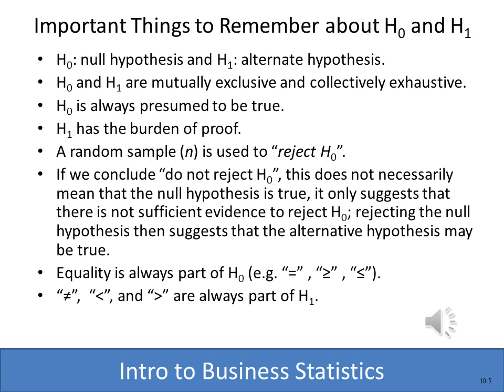H-sub-zero designates the null hypothesis and H-sub-one designates the alternate. These two are mutually exclusive, and together they include all possibilities — we're either greater than 22.5 or we're not. We always assume the null hypothesis is true; the alternate carries the burden of proof. We use a random sample and then either reject the null or do not reject it. We really don't ever accept the alternate; we just reject or do not reject the null. Equality signs — equal to, greater than or equal to, less than or equal to — are used in the null, while not equal to, less than, or greater than designate the alternate.